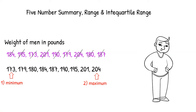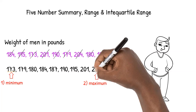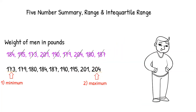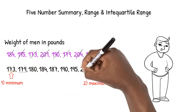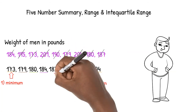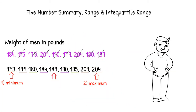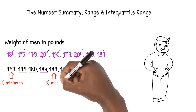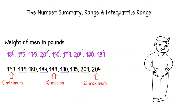The third number in the five-number summary is the number in the middle — the median. To find the median, we ignore the first and last numbers, then the second and second-to-last numbers, then the third and third-to-last numbers, and so on, until one number remains in the middle. This middle number, 187, is the median.